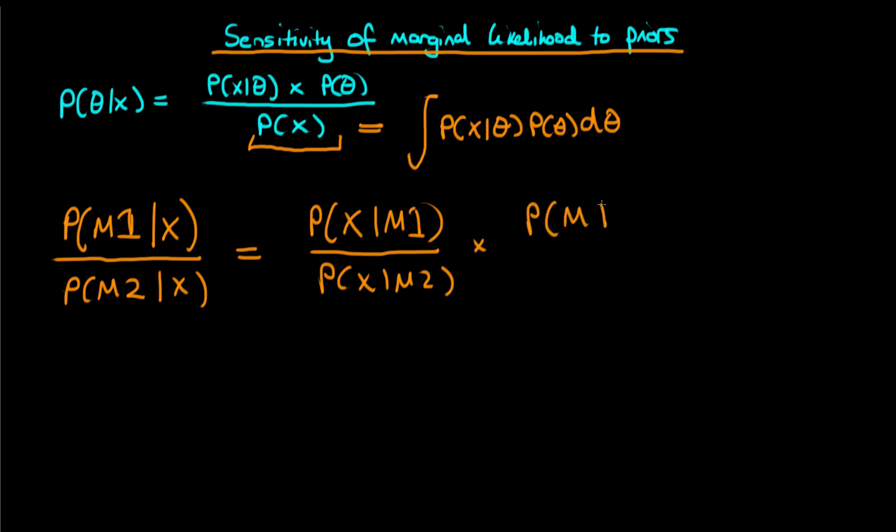Times the prior probabilities that we assign to each of these models. So that would be p of m1 divided through by p of m2. And each of these terms in this expression here, we actually call the Bayes' factor.